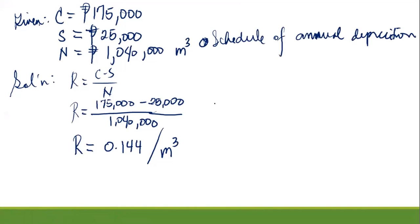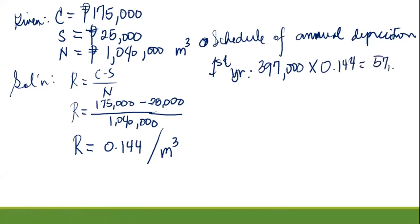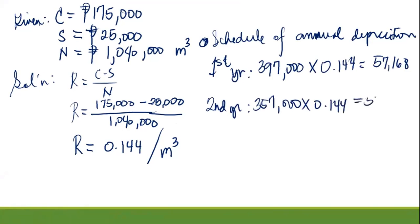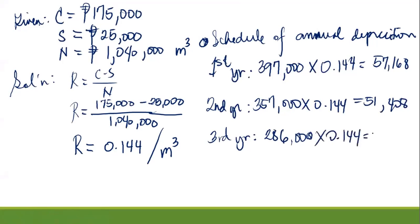The schedule of annual depreciation: Year 1: 397,000 × 0.144 = 57,168 pesos; Year 2: 357,000 × 0.144 = 51,408 pesos; Year 3: 286,000 × 0.144 = 41,184 pesos. That is the schedule of annual depreciation over three years.